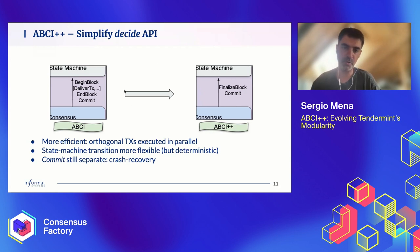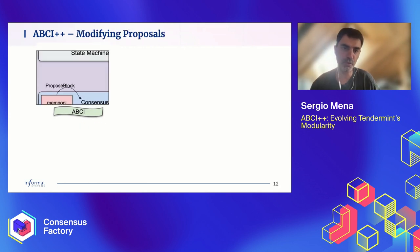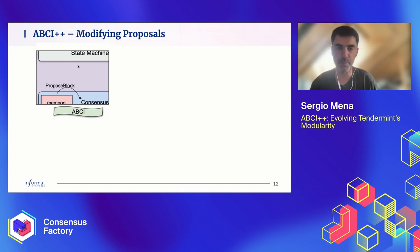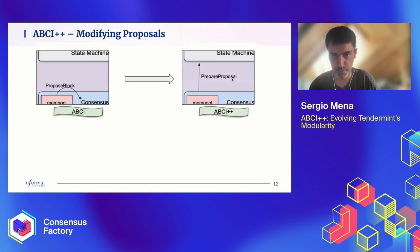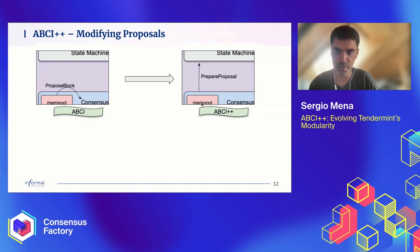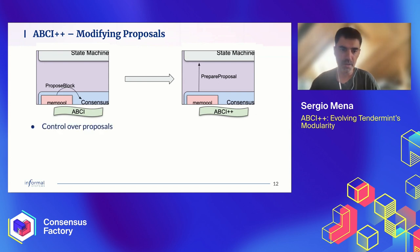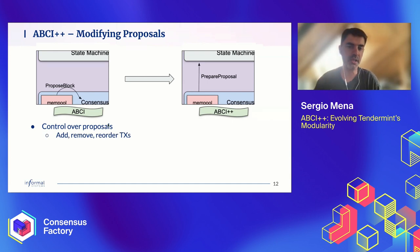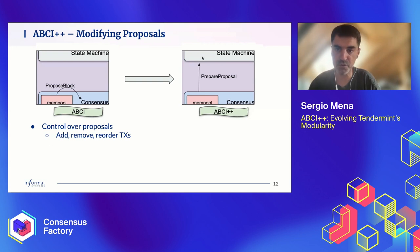We are planning to revisit our crash-recovery mechanism, and once we do, chances are we'll be able to coalesce Commit into FinalizeBlock as well. Now let's move on to the proposal part. In ABCI, the most obvious characteristic was that the state machine is not involved in the proposal. We have introduced a new API called PrepareProposal. Whenever consensus considers it's time to propose a new block, it reaps transactions from the mempool as before, but then makes that raw proposal available to the state machine via this API.